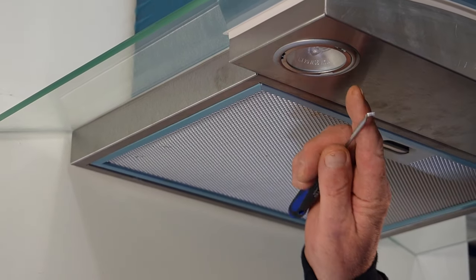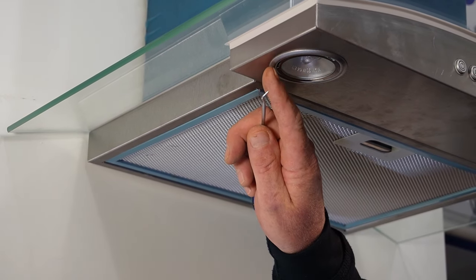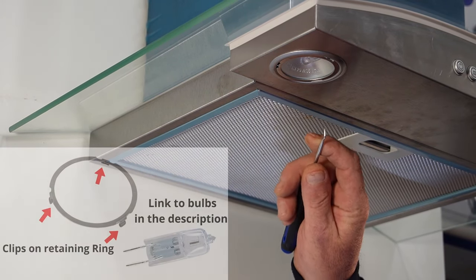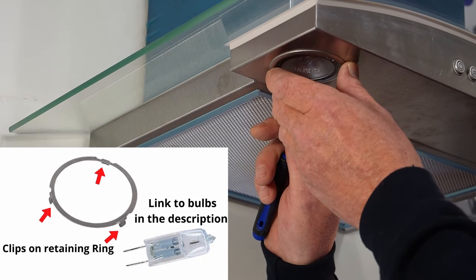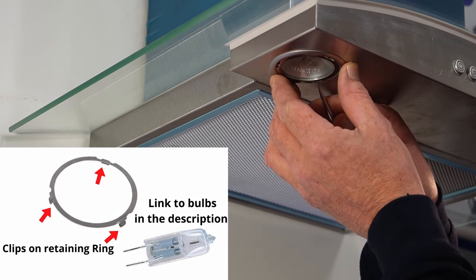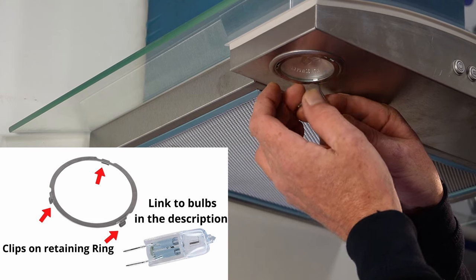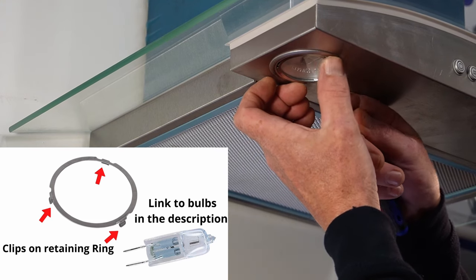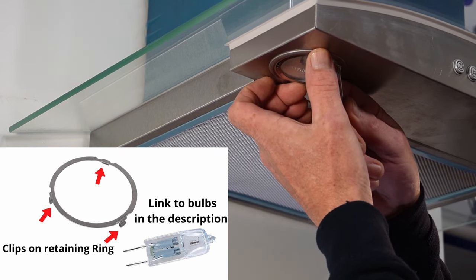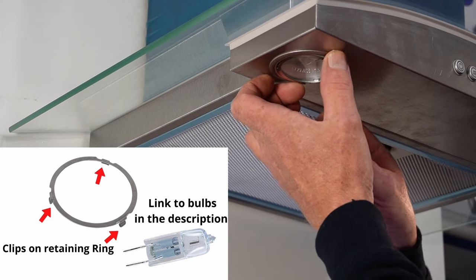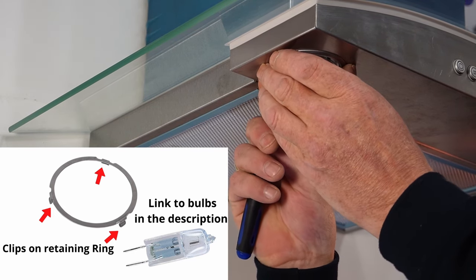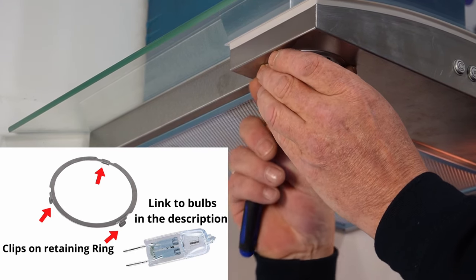Using a small screwdriver you will notice there's three insert points all the way around and you carefully, either with a flat blade screwdriver, need to prise the stainless steel rim away from the light fitting, being careful not to damage the glass. These glass are very fragile.